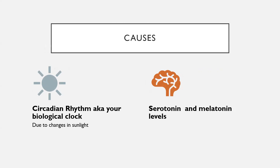Some of the causes of seasonal affective disorder remain unknown, but some factors may come into play, including your circadian rhythm, also known as your biological clock. The reduced level of sunlight in fall and winter may cause winter onset SAD. This decrease in sunlight may disrupt your body's internal clock and lead to feelings of depression. For example, at 4:30 or quarter to five it may already be dark outside, and when our body notices darkness, it starts to think it's time for bed — which is part of why oversleeping is a concern, along with later sunrises during short winter days.